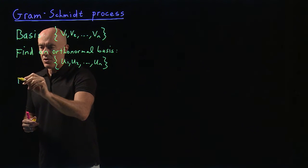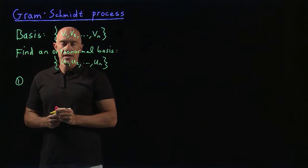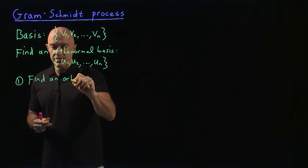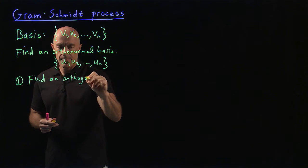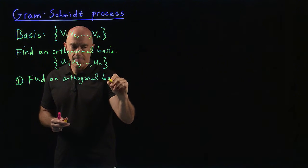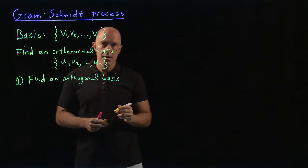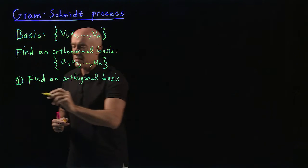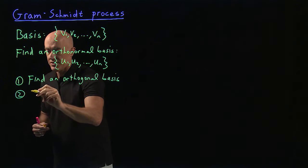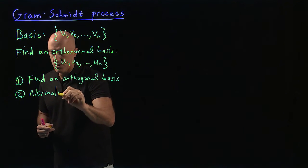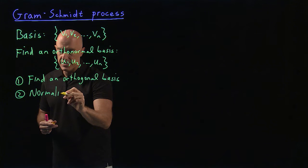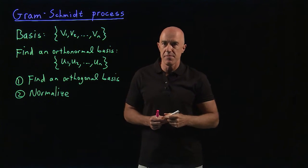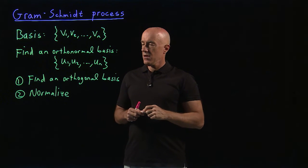So the first step is the most important one, is to simply find an orthogonal basis first. Before we normalize the vectors. So the second step is to normalize. So the normalize process is the simple one, but finding the orthogonal basis may be a bit challenging.